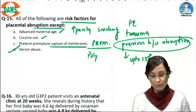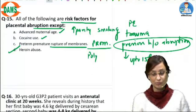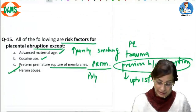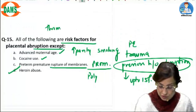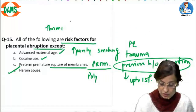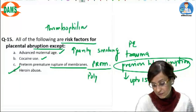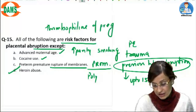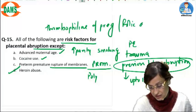Additional risk factors for placental abruption include thrombophilias of pregnancy and folic acid deficiency.